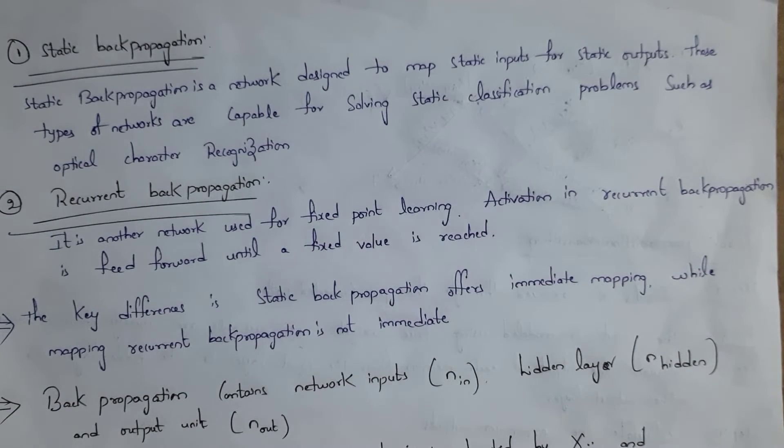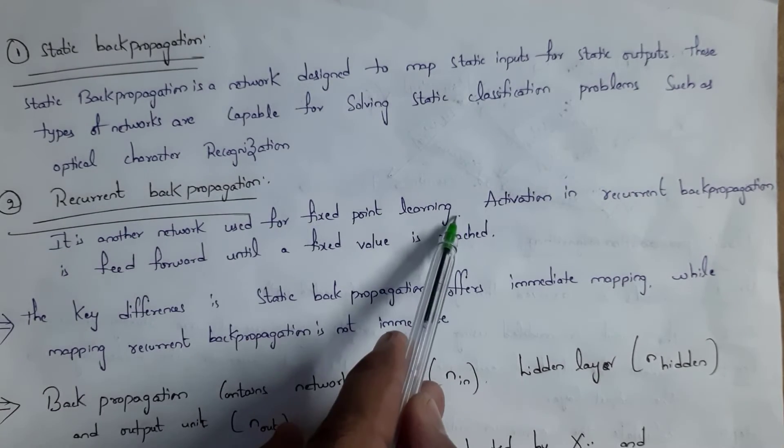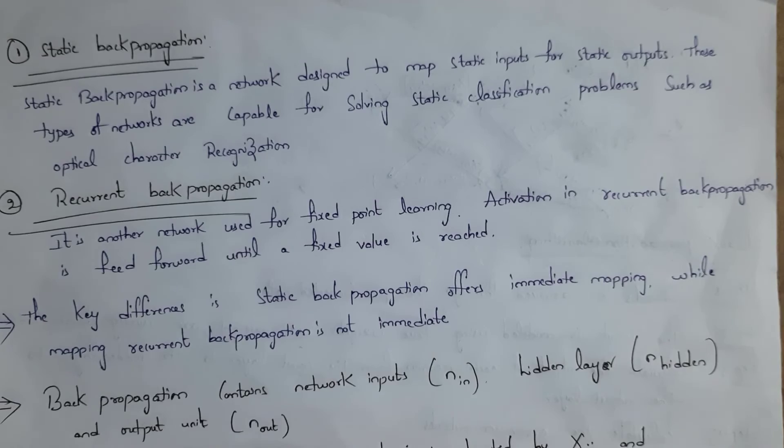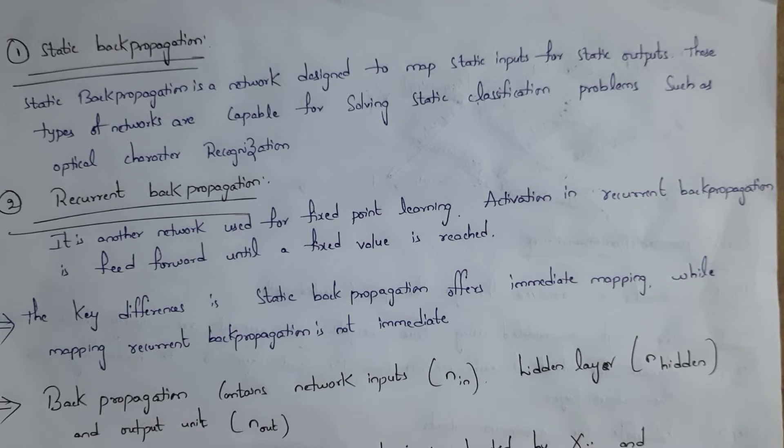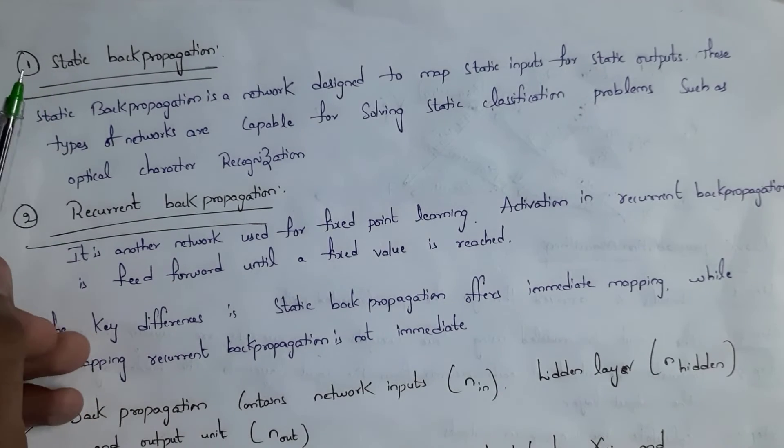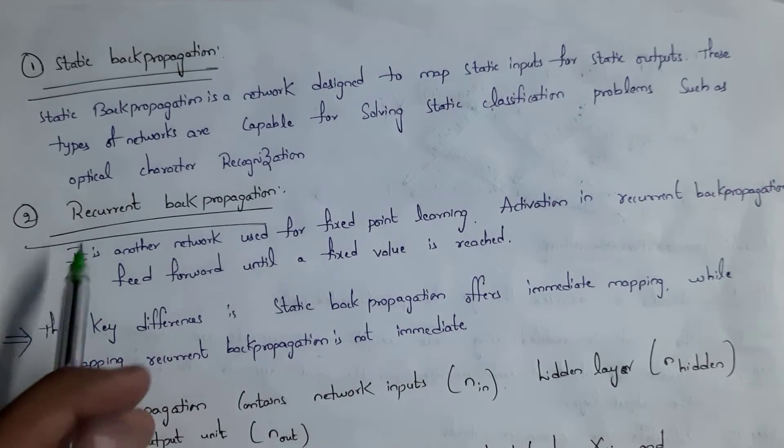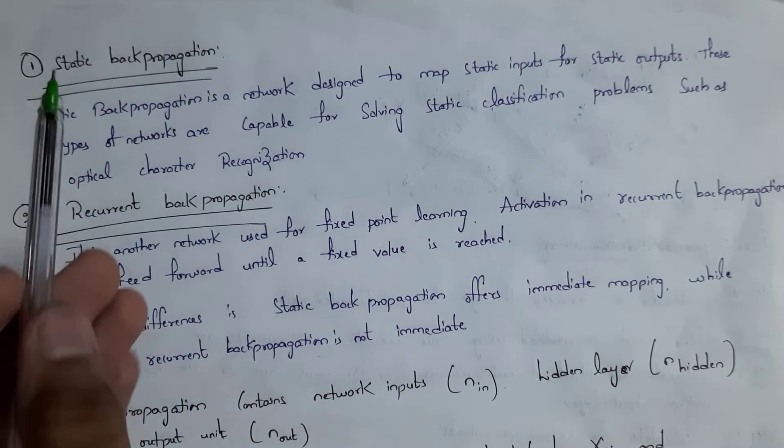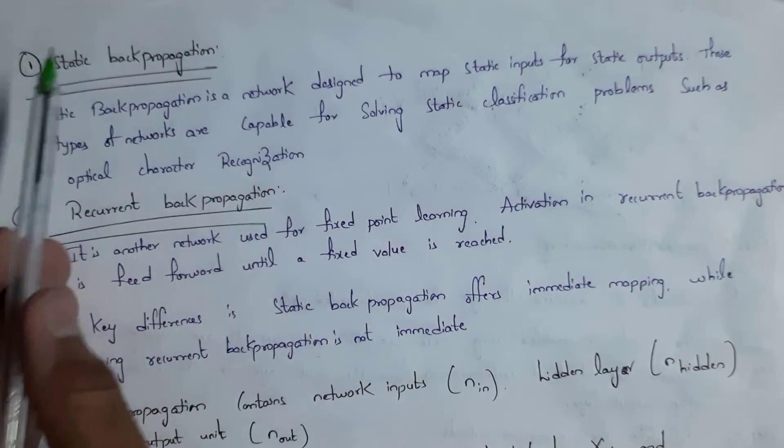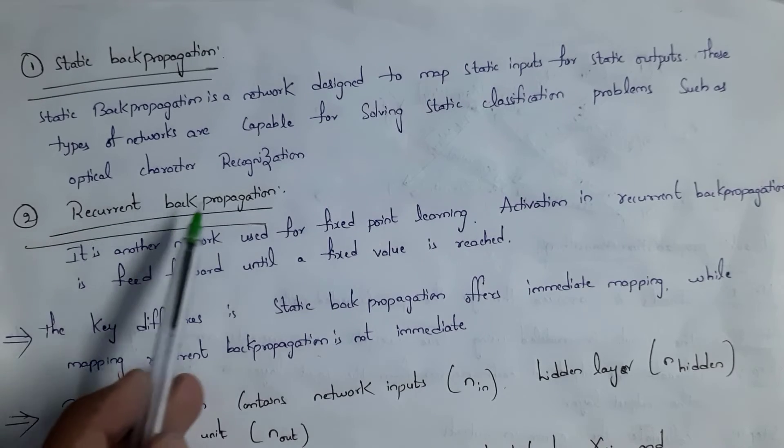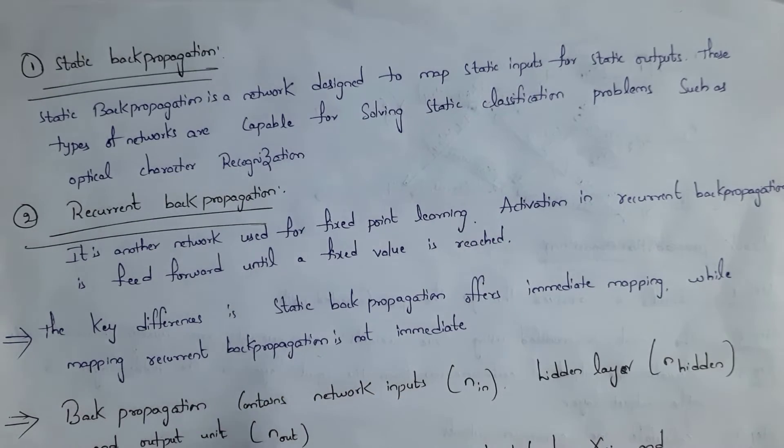Recurrent backpropagation network is used for fixed point learning. In recurrent backpropagation, activation is feed forwarded until we get fixed value. Difference between static backpropagation and recurrent backpropagation is in static backpropagation, mapping is immediate. But whereas in recurrent backpropagation, mapping is not immediate.